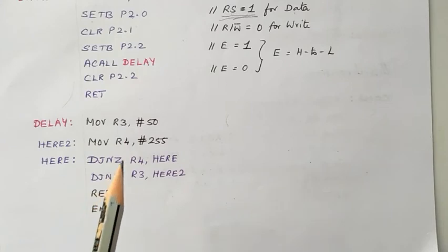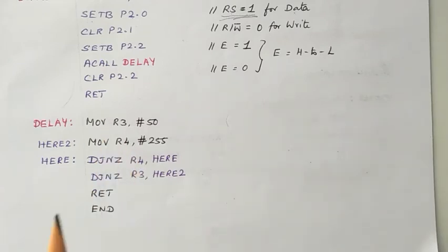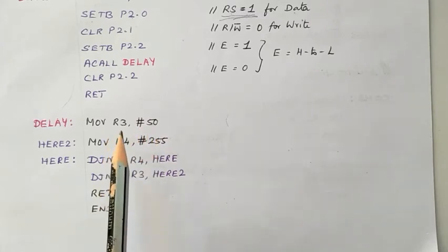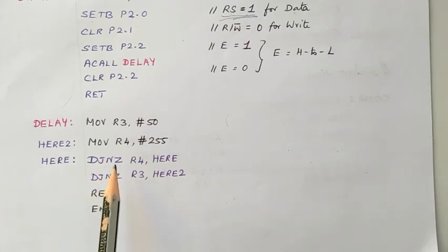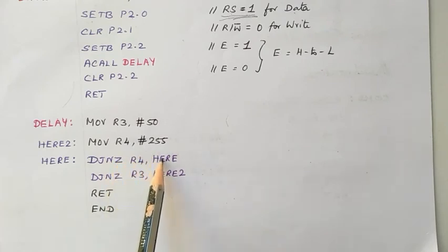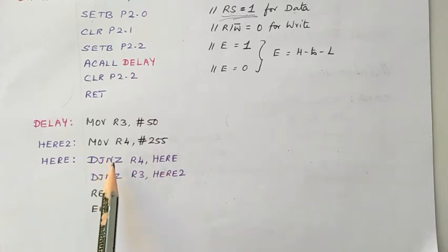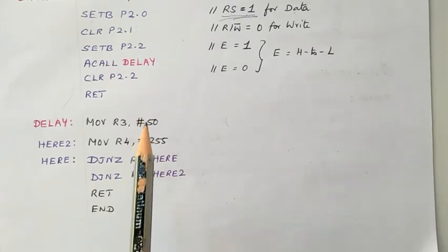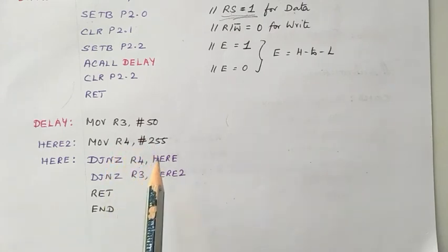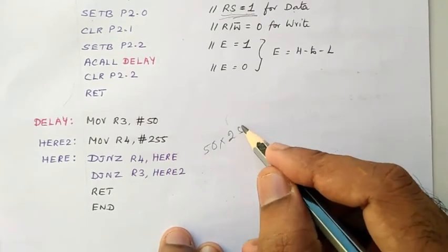The delay routine uses registers R4 and R3 to create a time delay. R3 is loaded with 50 (decimal) and R4 with 255 (decimal). Using the 'decrement and jump if not zero' instruction, R4 decrements from 255 down to 0 as the inner loop. Each time R4 reaches zero, R3 is decremented. So the total delay is 50 times 255 loop iterations, giving us the required delay.